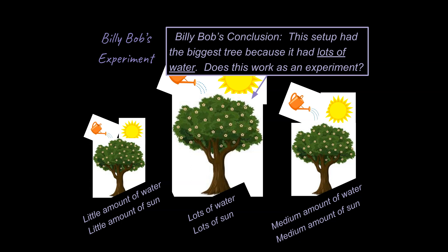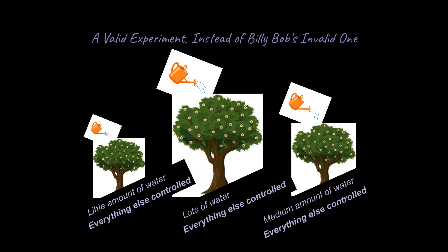So what could Billy Bob have done better to be able to test the amount of water and the amount of sunlight on his tree growth? Well, one thing he could have done better is he could have broken this up into two different experiments. And so the first one, he could vary, he could change the amount of water that these plots of land got, but keep everything else the same. He would want to control the other variables. So to control a variable means to keep steady as much as possible, and to account for any differences statistically in your experiment as well.